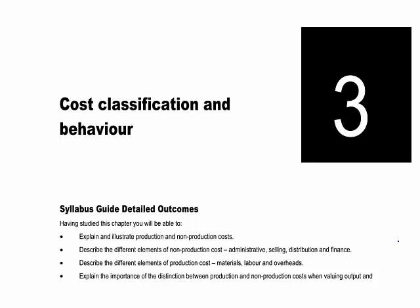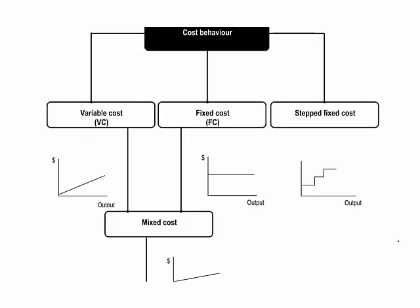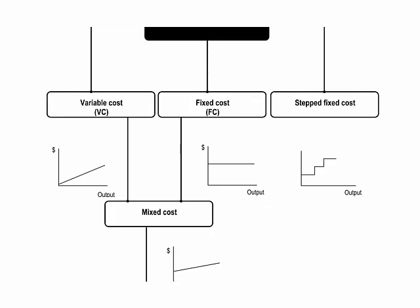Chapter 3 is looking at cost classification and behaviour, an important topic in management accounting. We need to be able to identify and explain what's going to happen to costs at different levels of output so that we can make future predictions. Cost behaviour helps us identify the different types of costs that can occur, and the ultimate aim of splitting out costs according to their behaviour is to predict what's going to happen to total costs at a given level of output.